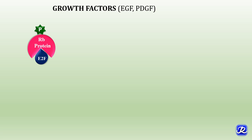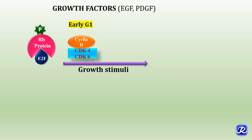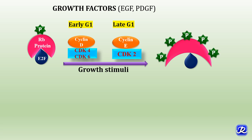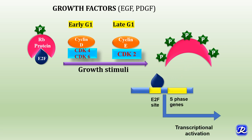In proliferating cells, growth factors are released and culminate in synthesis of cyclin D CDK4/6 complex in early G1 and cyclin E CDK2 complex in late G1. These complexes bring about phosphorylation of RB protein, rendering it inactive. The E2F factor is released, binds to DNA, and brings about transcription of genes required in S phase, resulting in G1 to S phase progression.